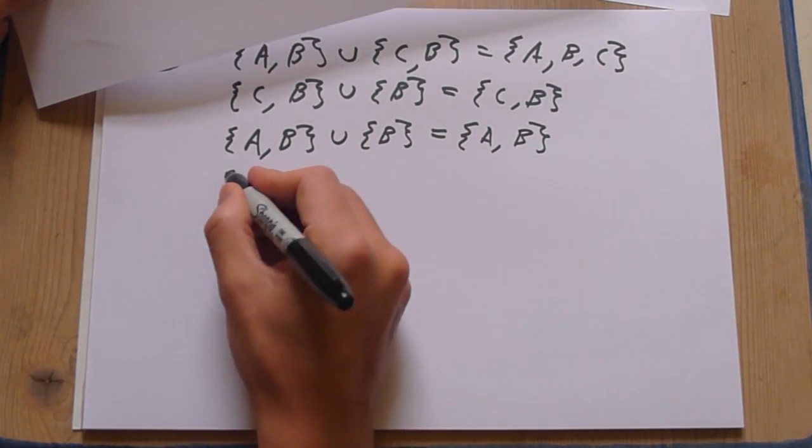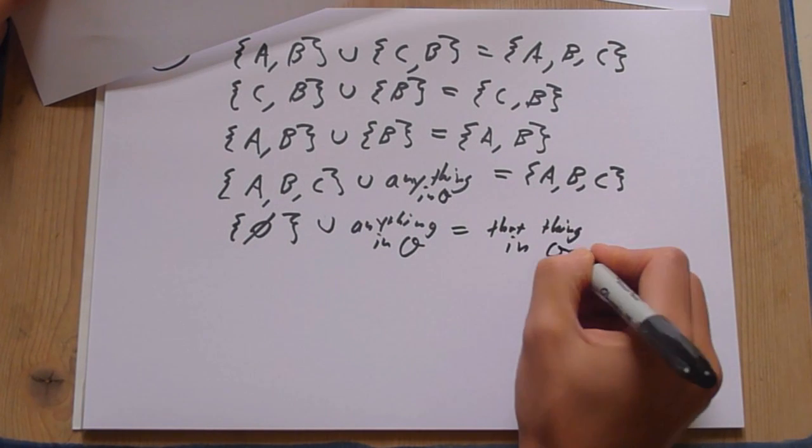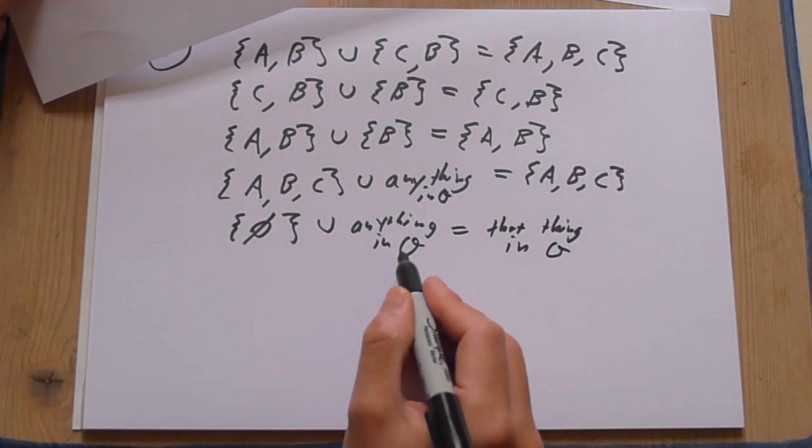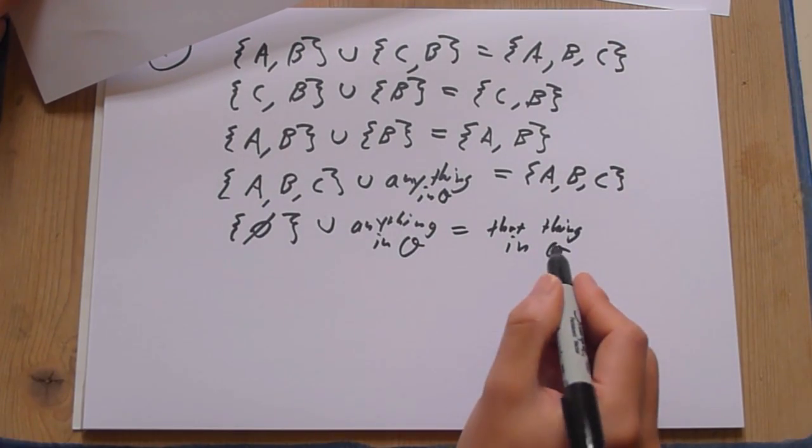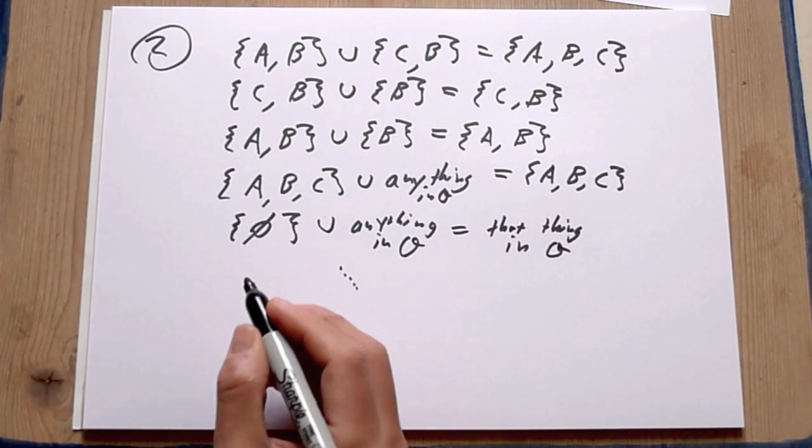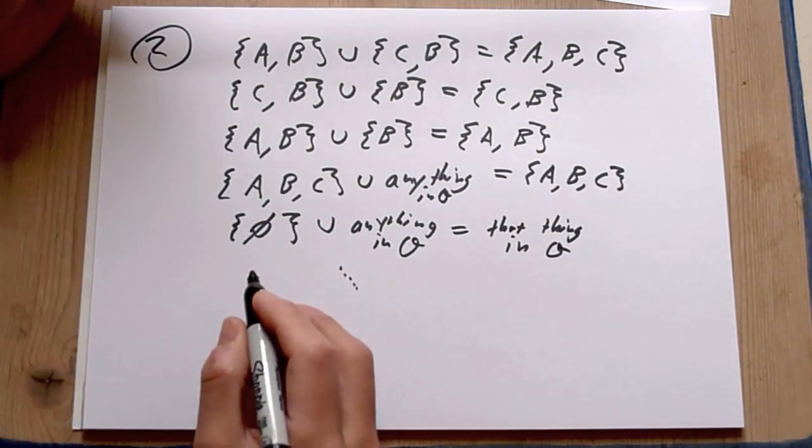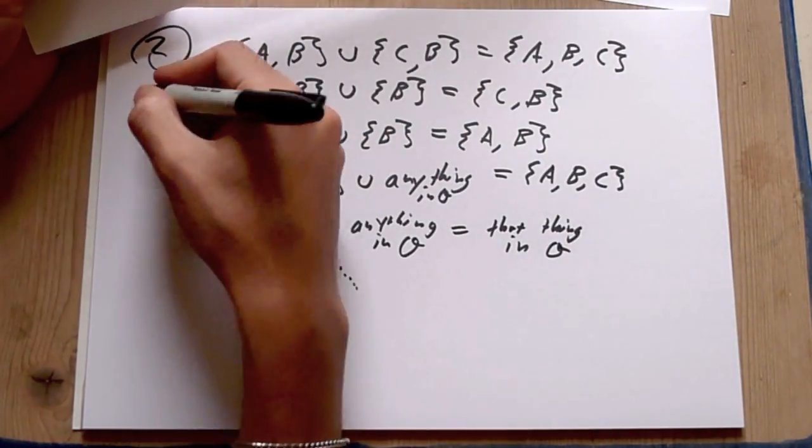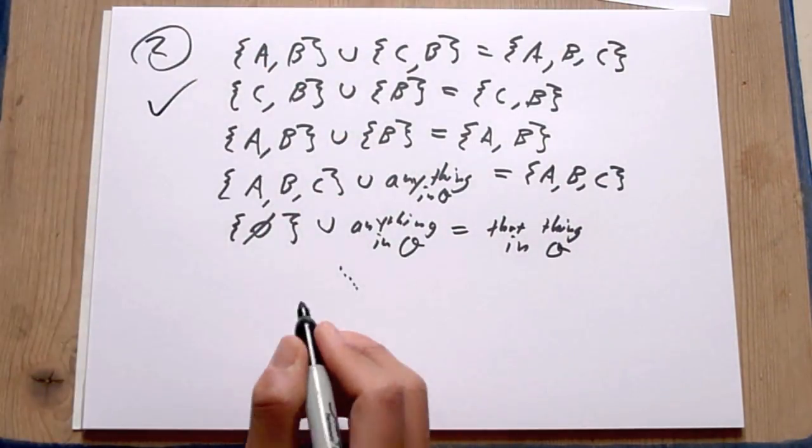If you take the intersection of the empty set with any element of O, you'll just get that element of O again. Anyway, if you take the union of an infinite number of things, you'll stay in the set of open sets. So, two is satisfied.